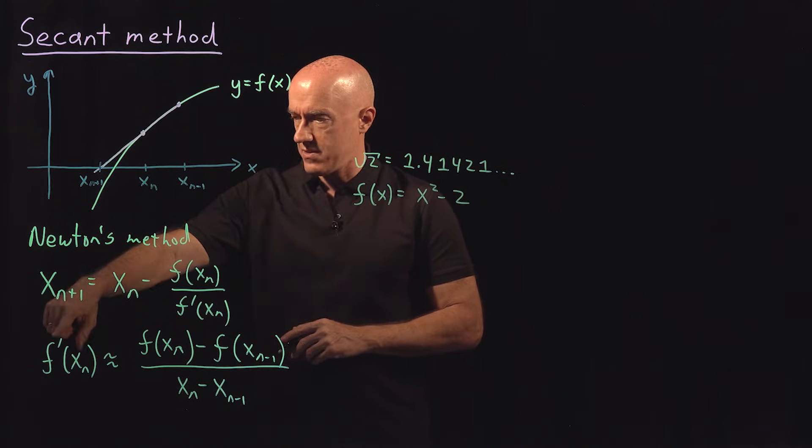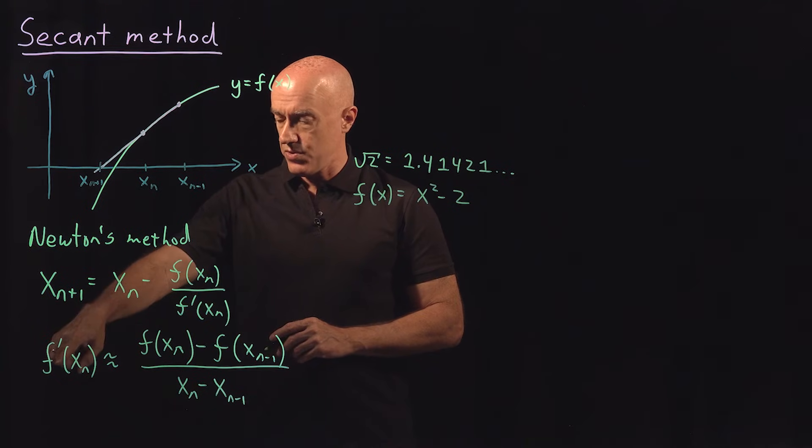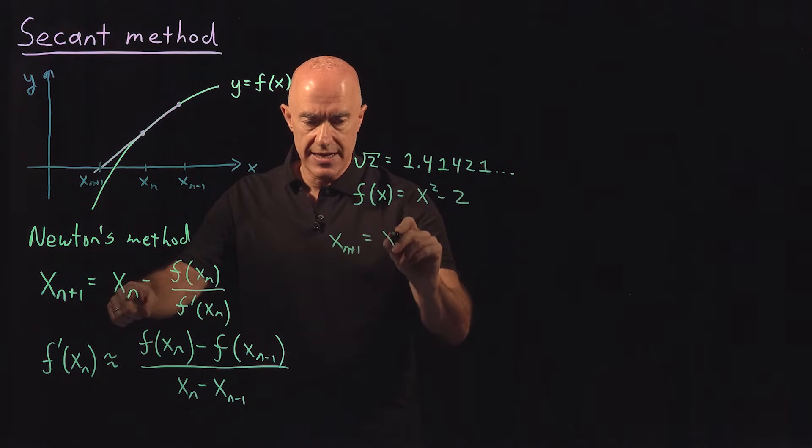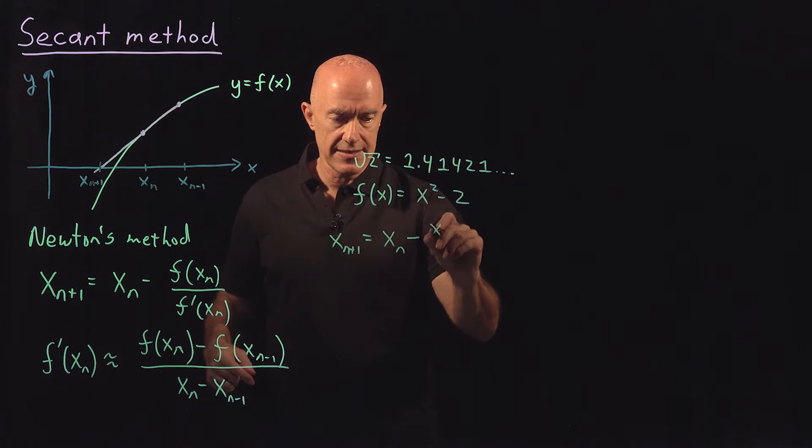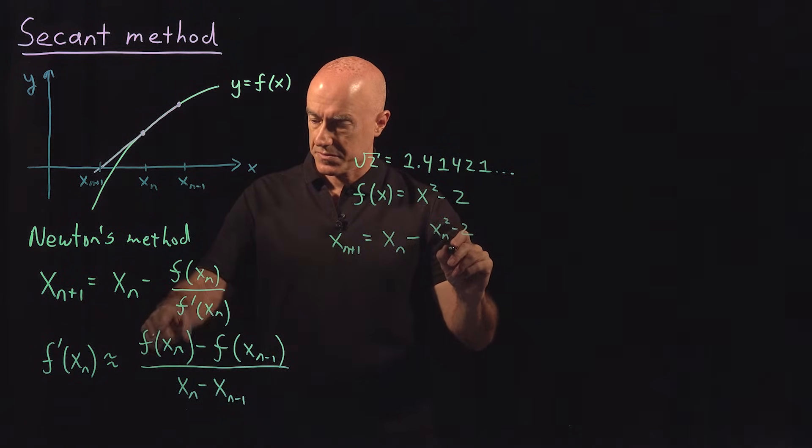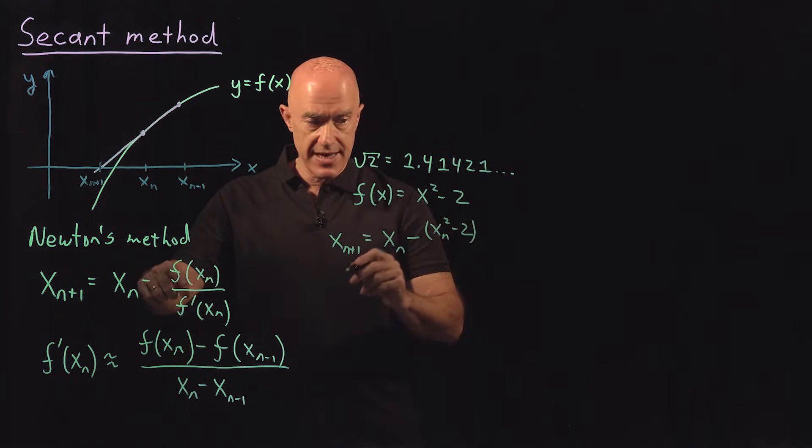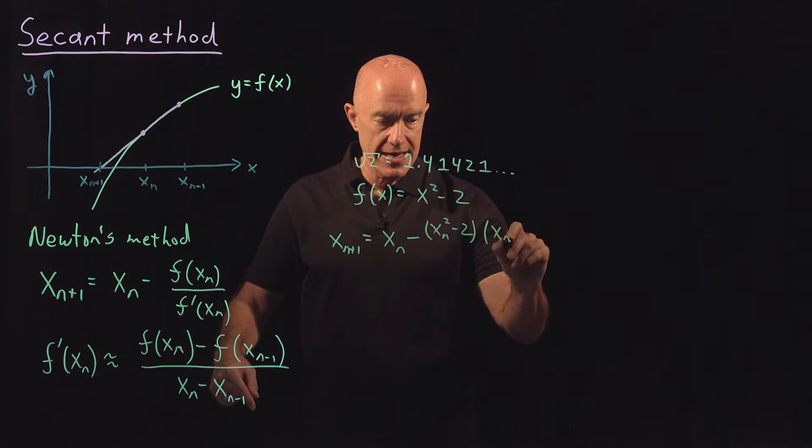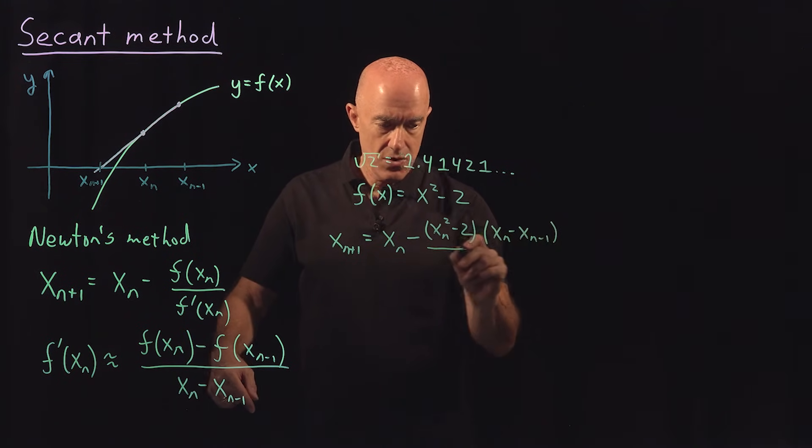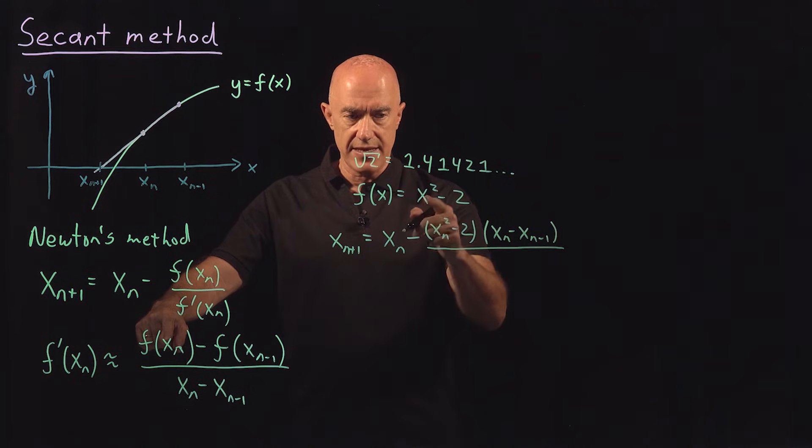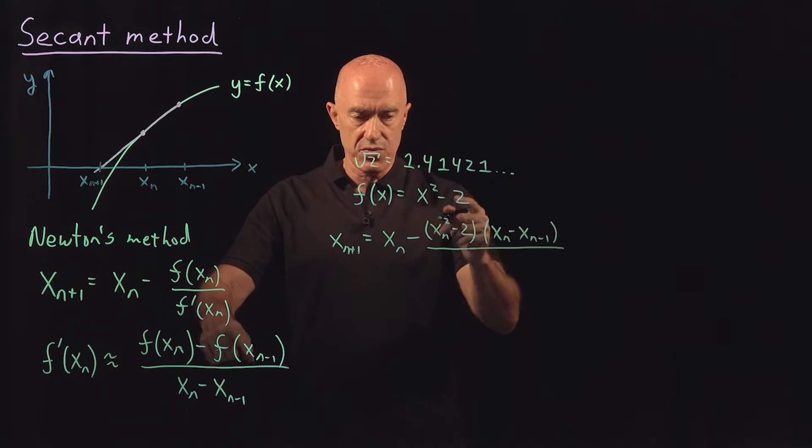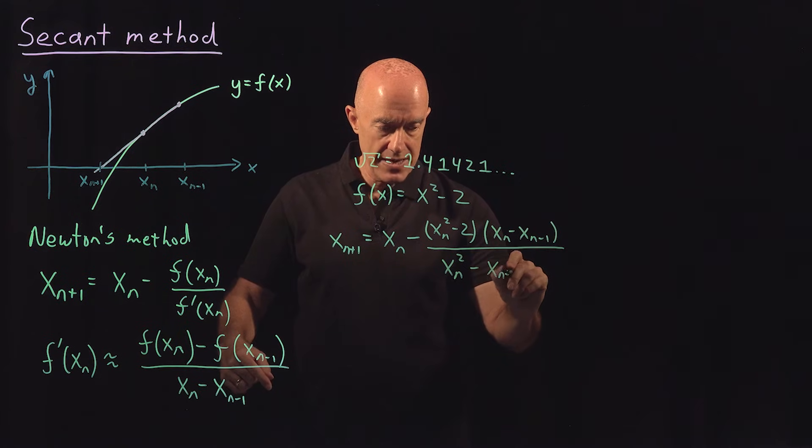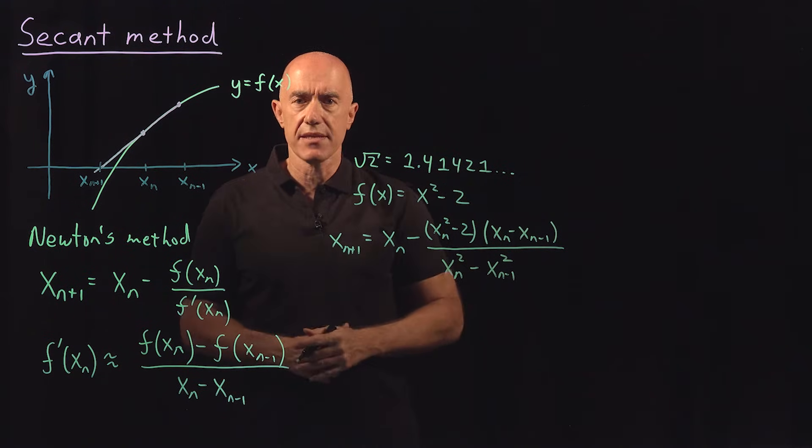If we're going to use the secant method, then we're going to approximate f'. So the secant method would be x_(n+1) = x_n - f(x_n) divided by f'(x_n). So f(x_n) is x_n² - 2, divided by the denominator: [x_n - x_(n-1)] over the numerator [f(x_n) - f(x_(n-1))]. So x_n² - 2 minus x_(n-1)² + 2. The 2's cancel, and that becomes x_n² - x_(n-1)². That would be your numerical iteration.